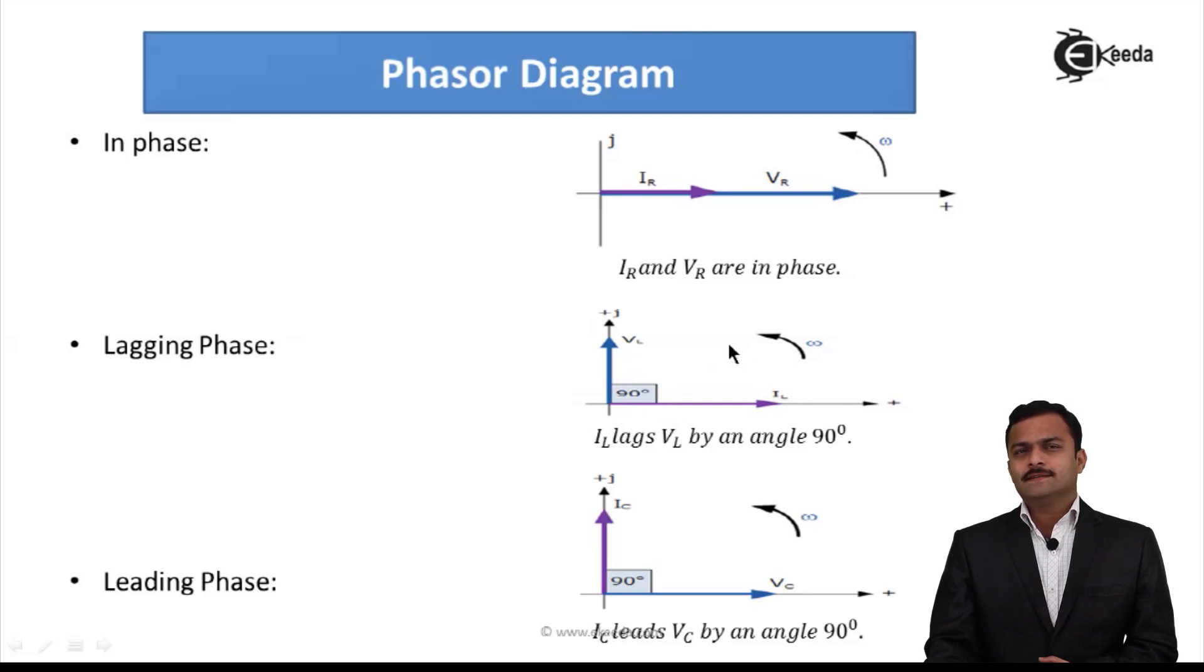Whenever I see these two waveforms or these two phasors on same diagram, this phasor diagram, I will get and I can say this I lagging this V by angle 90 degree because in a phasor diagram, this I is behind this V.